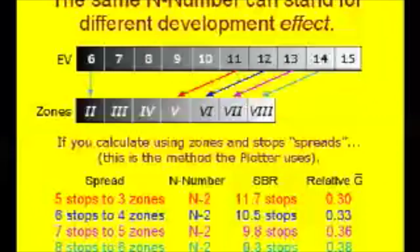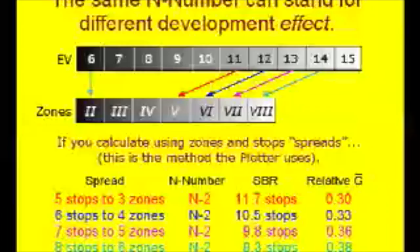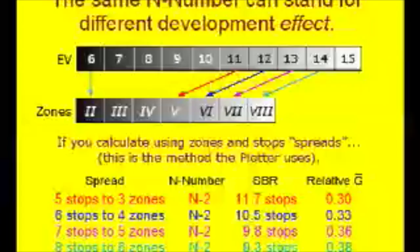To reinforce the notion that visualized zones are really average values, the BTZS software calculates zone ranges using the center of each zone as its real value. That changes the calculations and gives the N numbers different meanings. Because of this ambiguity, we don't use N numbers at all. The ExpoDev software and the PowerDial both use average gradient values to describe appropriate development.